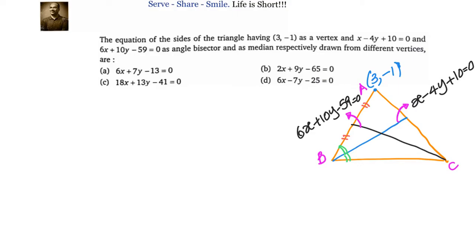We have been given that this line is a median and this is the angular bisector. We will use the midpoint formula to find out the coordinates of B, and we will use the angle between two straight lines formula to find out the slope of BC. Once we know the coordinates of A, B, and C, we can find the sides. Let's consider B as (x1, y1).